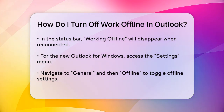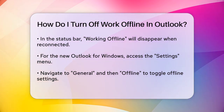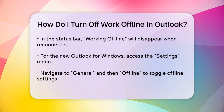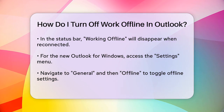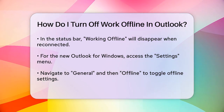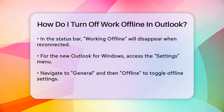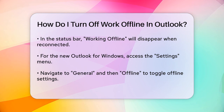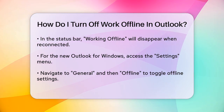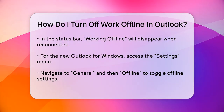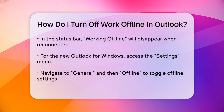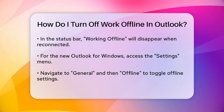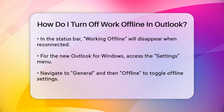In older versions of Outlook, such as Outlook 2007 or earlier, you would go to the File menu and select Work Offline to toggle it off. However, in newer versions, the ribbon-based design makes it easier to find and use this feature.